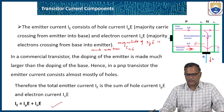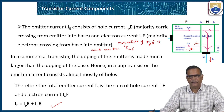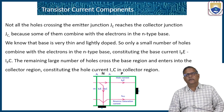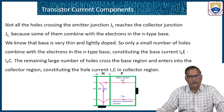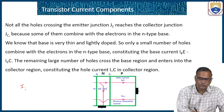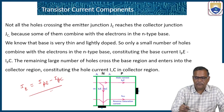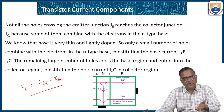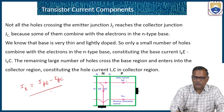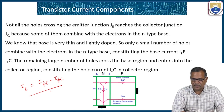Not all holes crossing the emitter-base junction will reach the collector junction, because some of them are lost due to recombination in the N-type base — that constitutes the base current. The base current is represented by IPE minus IPC: some holes are lost due to recombination in the base region, and the remaining holes reach the collector region as IPC.